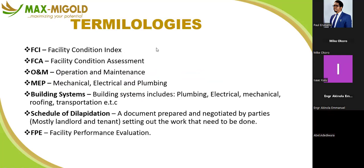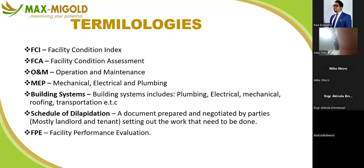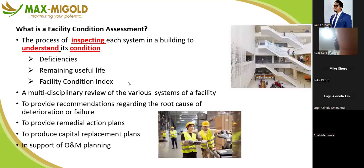Key terminology you may encounter in this module: FCI stands for Facility Condition Index; FCA stands for Facility Condition Assessment; O&M is Operational Maintenance; MEP — which we used to call MIE — stands for Mechanical, Electrical, and Plumbing. Building systems include plumbing, electrical, mechanical, roofing, foundational, and transportation systems. A schedule of dilapidations is a document prepared and negotiated by parties — mostly landlord and tenants — setting out the work that needs to be done. Then we have facility performance evaluation.